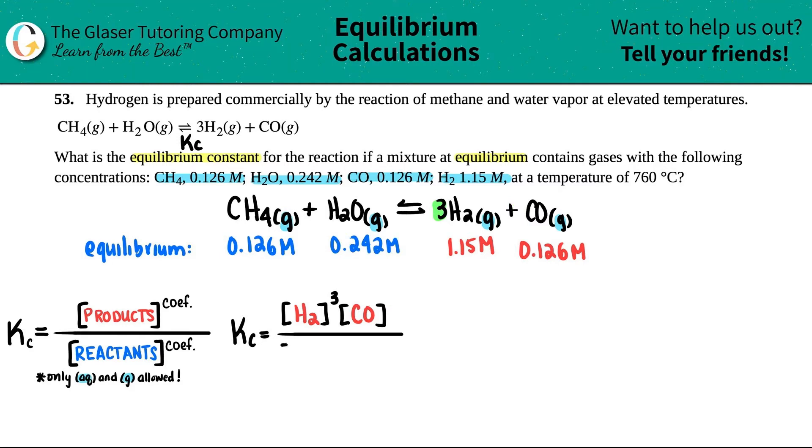Let's move on to the reactants. This would be concentration of CH4. Close up that bracket. There's a one in front of here. So I don't have to raise it to the first because anything raised to the first is itself. And the same thing goes for the H2O.